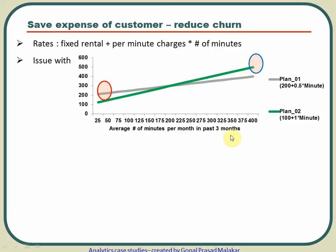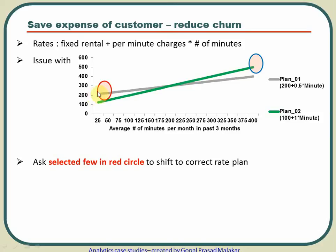The benefit for the firm is that it reduces churn, because customers often leave primarily due to cost. However, for customers in the red circle — those who have been paying for two years and using rarely — there is no point calling them to suggest a plan change. This type of customer is happy with what they have, and over-explaining might cause them to leave your network entirely.